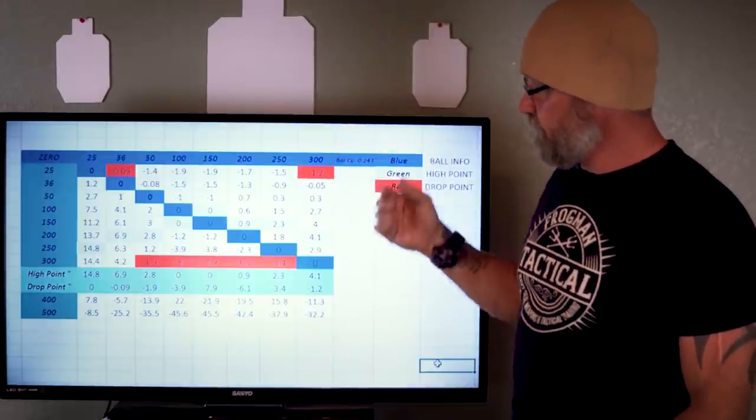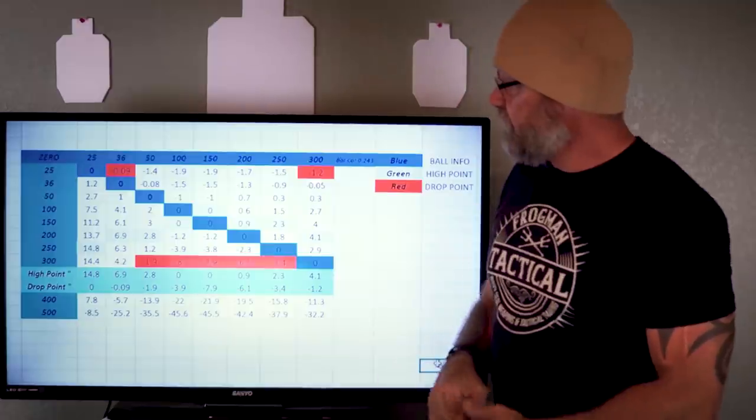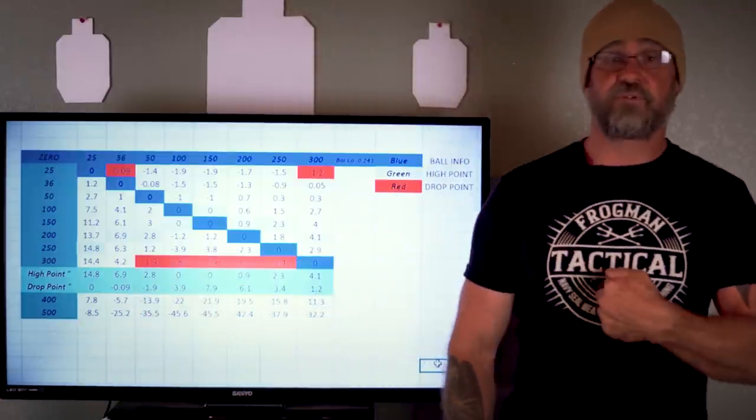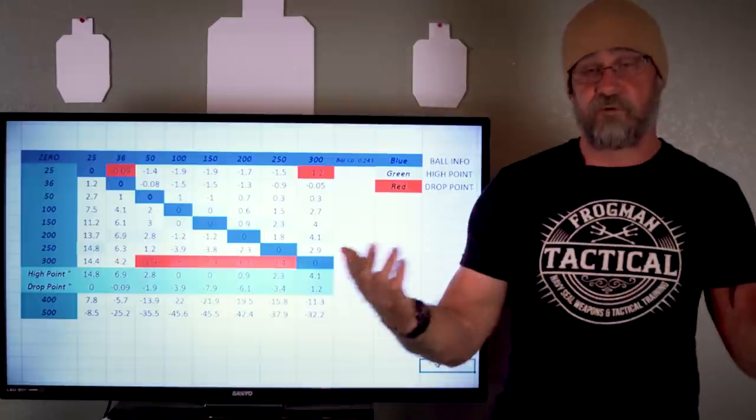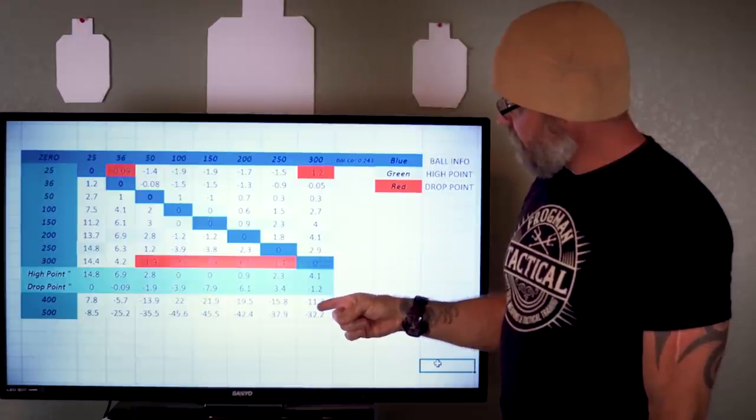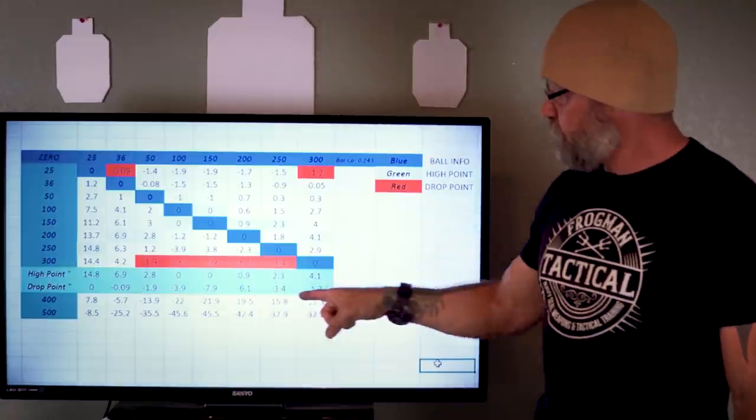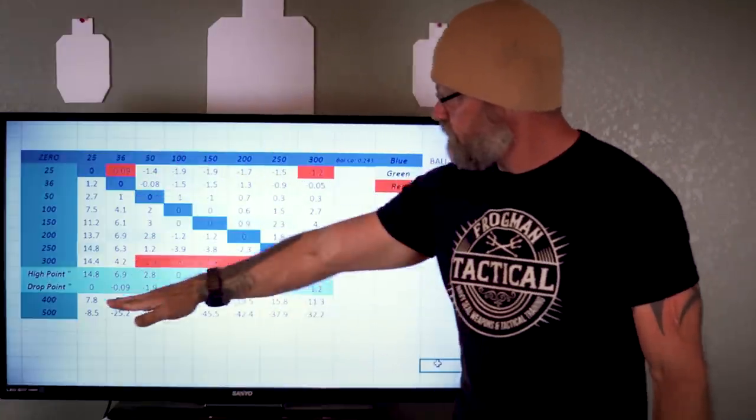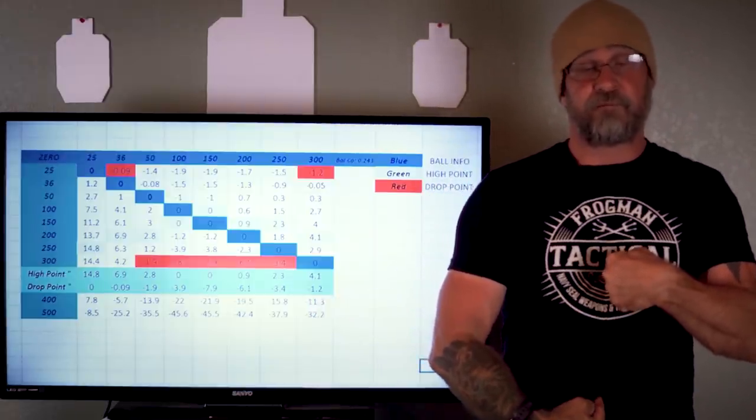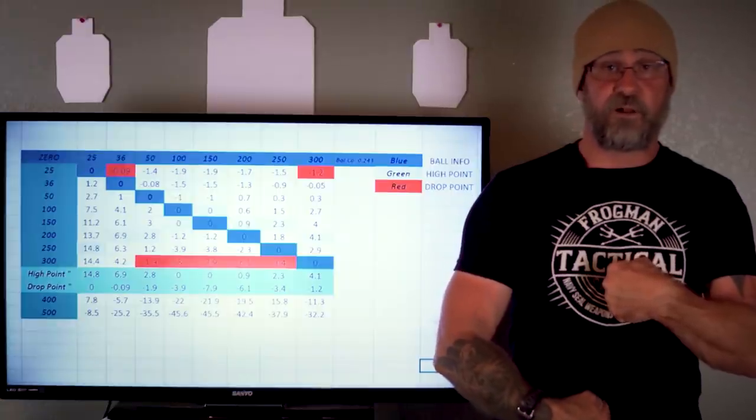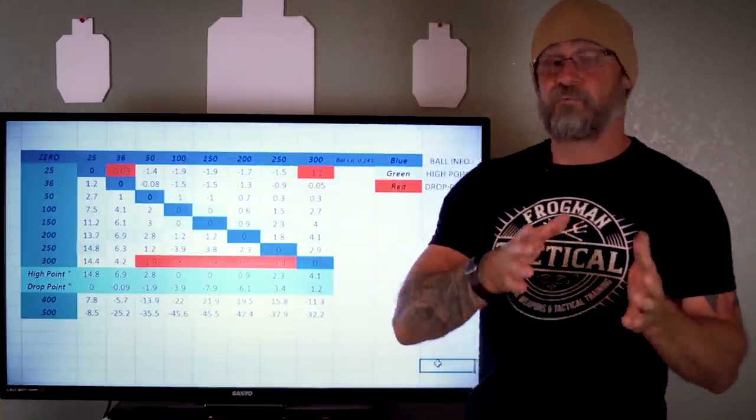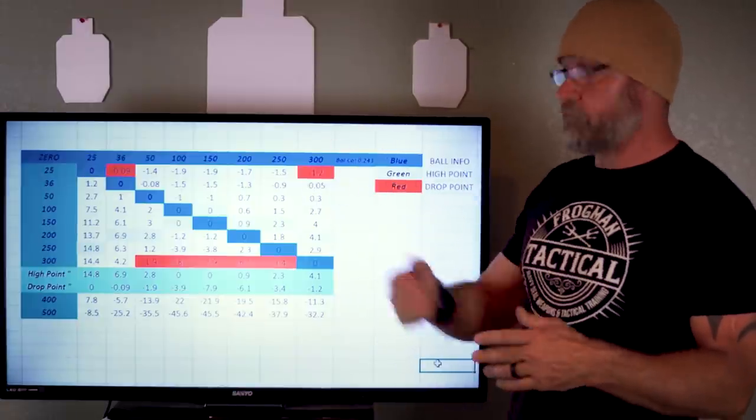So let's go to 36 yard zero, 400 yards, and it's a 5.7 inch drop. So point of aim, point of impact should be roughly six inches. 300 yards zero, let's go to 400 yards, and now we've got 11.3 inch drop. We've almost doubled the drop from a 36 yard zero to a 300 at the 400 yard mark, meaning if I aim here, 11 and a half inches. So is this still acceptable on a human body? Absolutely. So this is a deciding factor for me right here at the 500 yard marker.